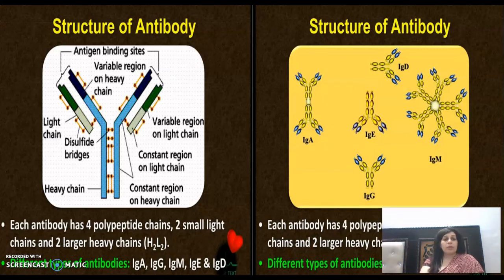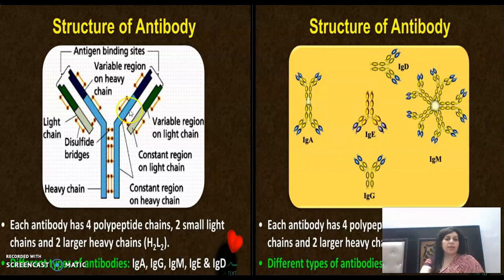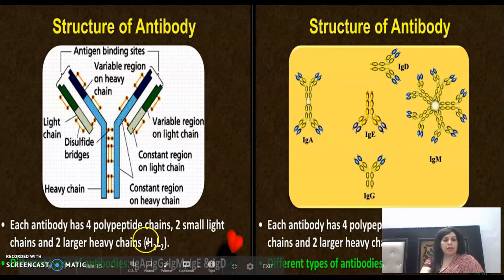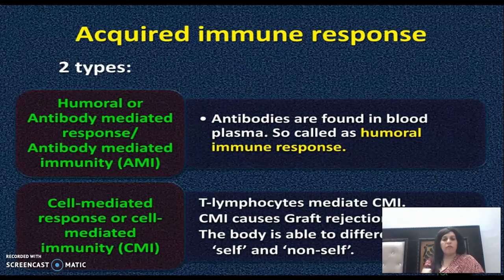Antibodies की structure H2L2 होती है — यानी 2 heavy chains और 2 light chains। Antibodies के different types हैं: IgA, IgG, IgM, IgE, और IgD। यह सभी अलग-अलग types के antibodies हैं जो pathogens से fight करते हैं।